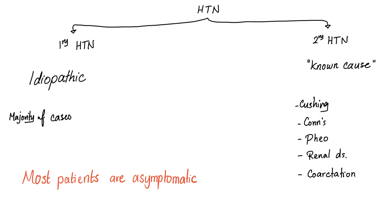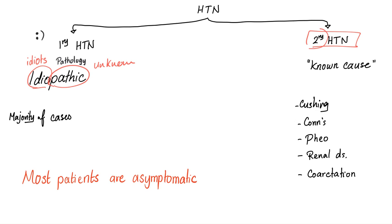We divide hypertension into primary hypertension and secondary hypertension. Primary hypertension is idiopathic — idiopathic means there is an unknown cause. Secondary hypertension, however, is secondary to something else; therefore, there is a known cause. This cause could be Cushing's disease, Conn's disease — which is primary hyperaldosteronism — pheochromocytoma, renal disease, or coarctation of the aorta.